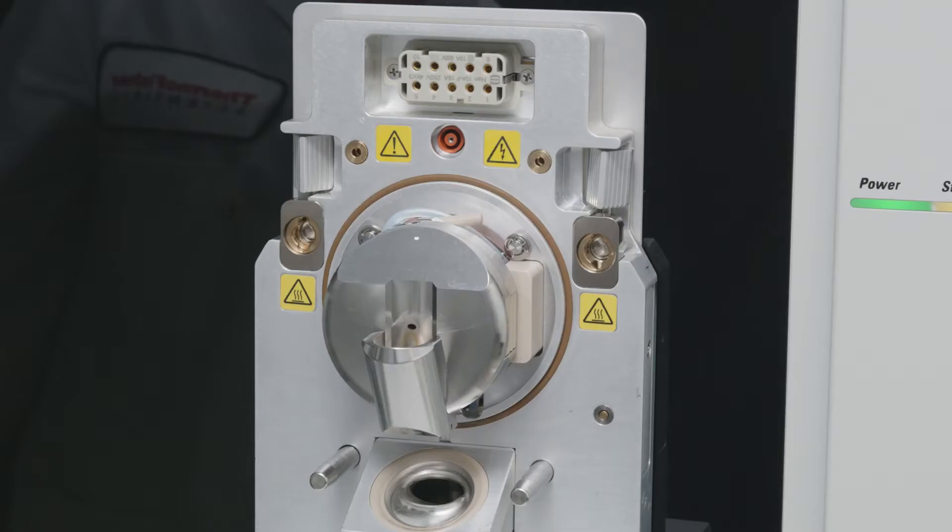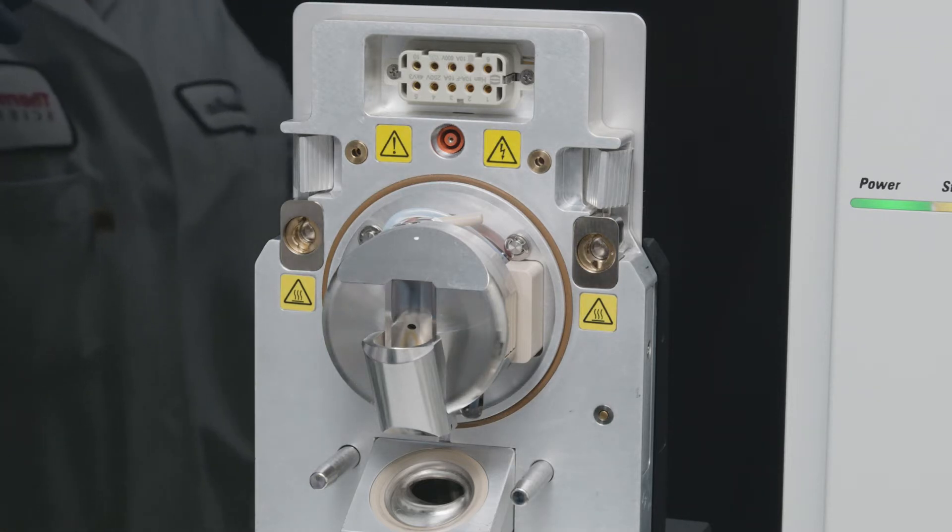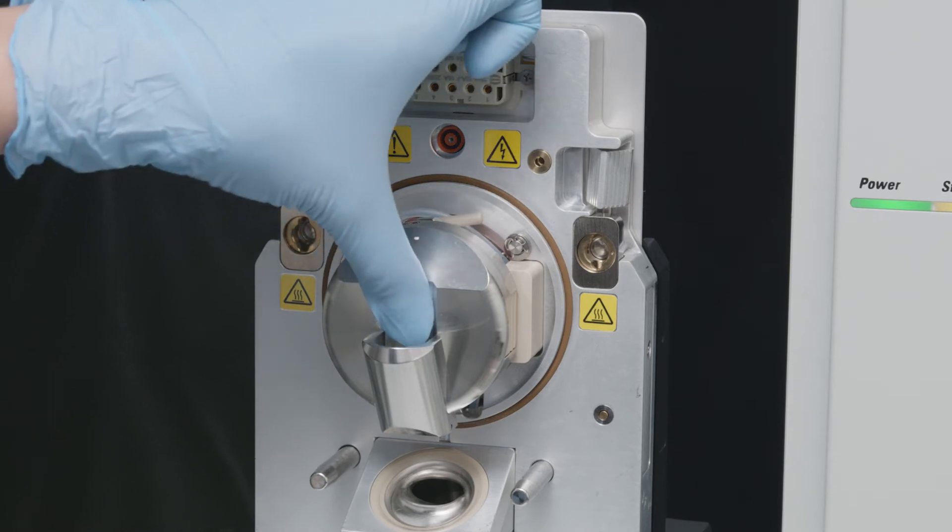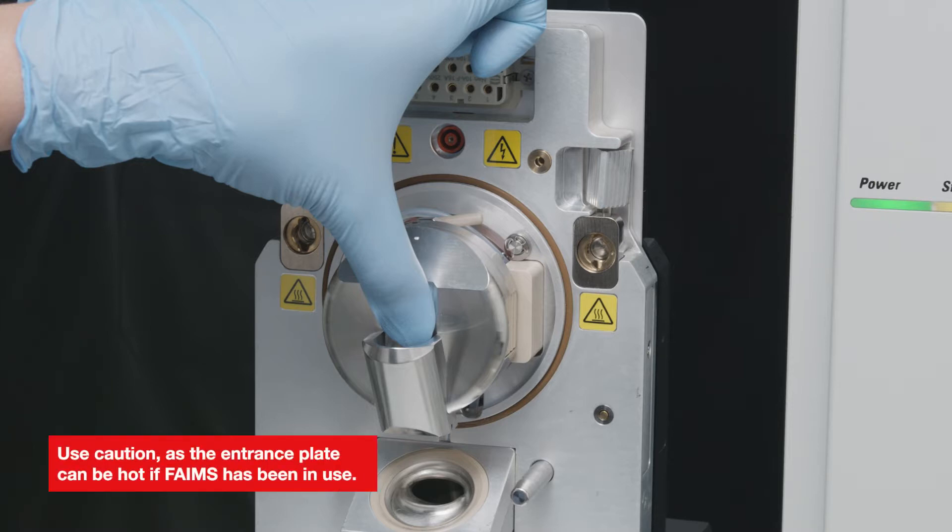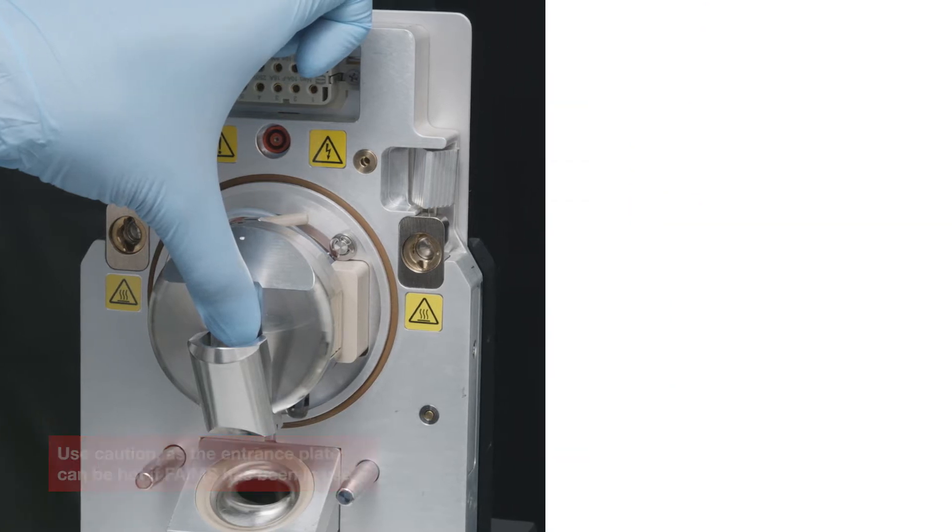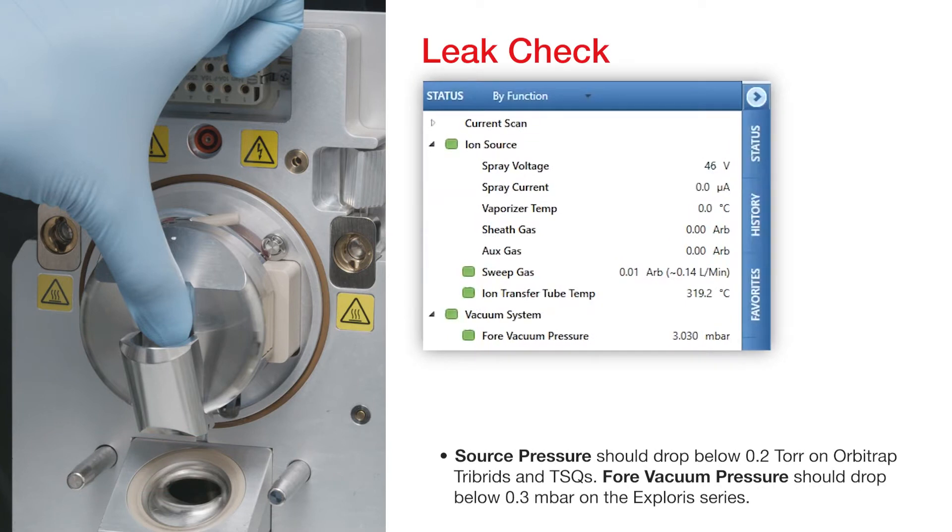Next, perform a leak check to ensure that the electrode assembly is sealed properly, as a leak might impact ion transmission. To do this, place a gloved finger over the orifice on the entrance plate. Use caution, as the entrance plate can be hot if FAIMS has been in use. The source pressure should drop below 0.2 TOR on Orbitrap tribrids and TSQs, or below 0.3 millibar on the Explorus series.